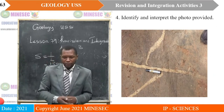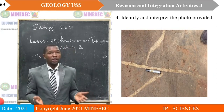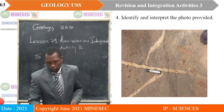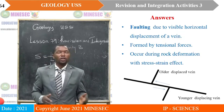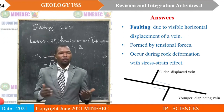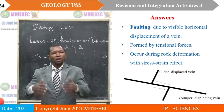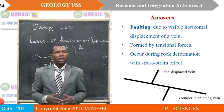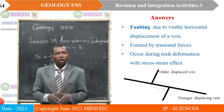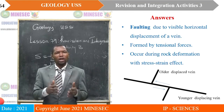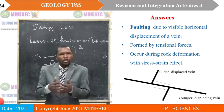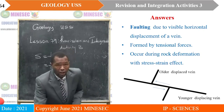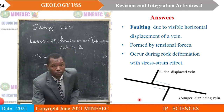Looking at this photo — identify and interpret it. It is faulting because there is visible displacement. Faulting is related to tensional forces and occurs during brittle deformation with stress-strain effect.